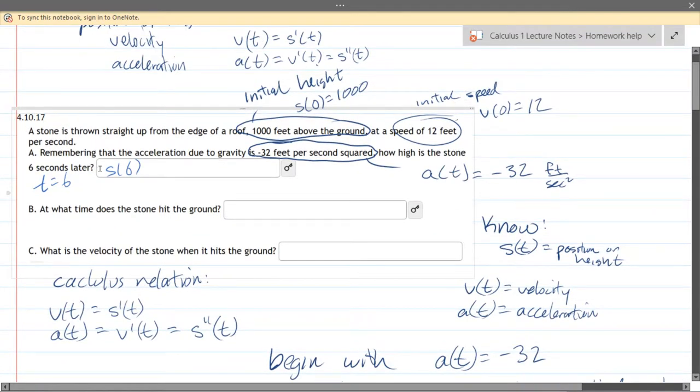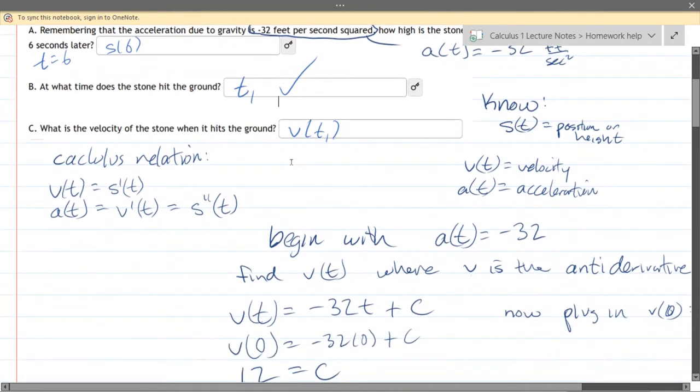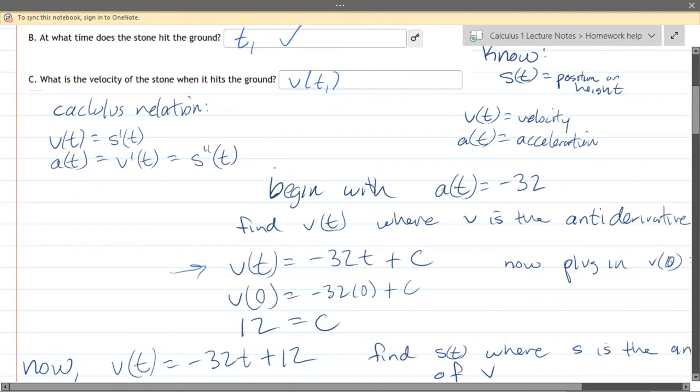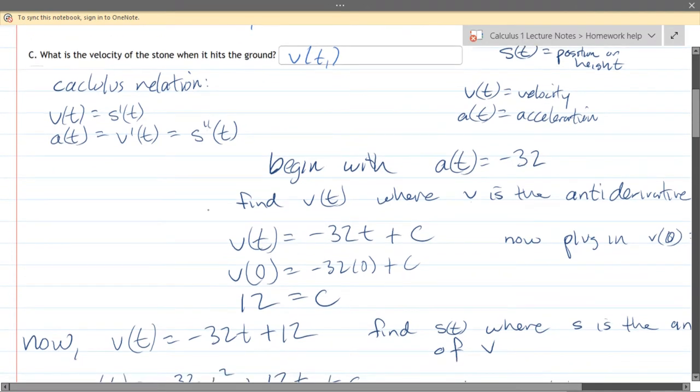So you get two solutions, make sure you use the positive one. That will be the time it hits the ground and that will be part b. What is the velocity of the stone when it hits the ground? So I'll label this as t1 for that time. How do you know the velocity at a certain time? That's the velocity function v of that t1 value. You can submit part b to make sure you get your time right and then go on to part c and plug in the correct time value to your velocity function. Here is the velocity function you would use to get v of t1 right there.